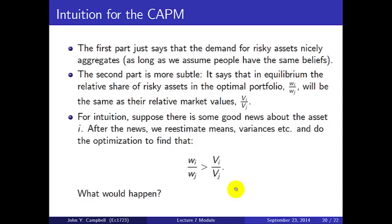What's the intuition of this model? The first part says that if people have the same beliefs and are all mean-variance optimizers, they'll hold risky assets in the same proportion, and that demand will aggregate up. The second part, which is more subtle, says that in equilibrium the relative share of assets in the optimal portfolio demanded will be the same as their relative market values. The statement that demand equals supply in equilibrium may sound like magic, so let's give some intuition about what has to happen to establish this equilibrium.